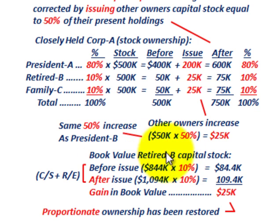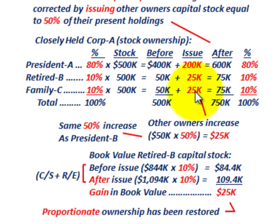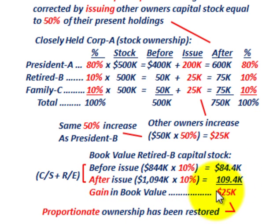Let's look at the book value for retired B after the preemptive rights. Before the issue, we were at $844,000 times 10% ownership, giving $84,400 in book value. After the increase, the total capital stock increased by $250,000 — $200,000 to president A, plus $25,000 each to retired B and C. That brings us to common stock plus retained earnings of $1,094,000 times 10%, giving retired B a book value of $109,400 — a gain of $25,000. The proportionate ownership has been restored.